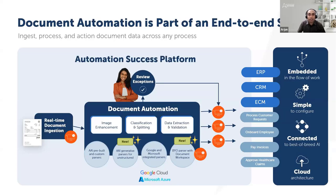Now we also support generative AI. Earlier in document automation you could only process semi-structured documents, meaning they had a tabular format and it was easier to read information within that. But now it can also read from unstructured documents — you can feed in any kind of agreements or documents that have no tabular format at all, and still be able to extract the information from them.